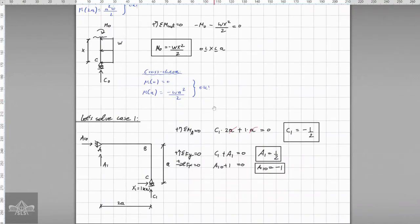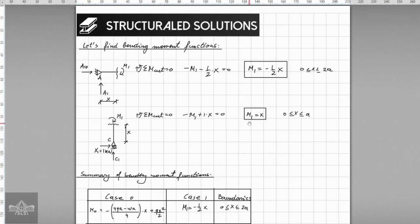Now we have to do the same thing as we did for case 0, but now we have to do for case 1 where we have to apply that virtual load of 1kN. Again we use the equilibrium equations to determine the support reactions, and the next step to be done is to find the bending moment functions where the same approach is going to be used for this case.